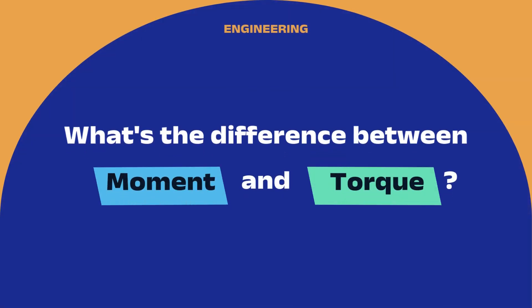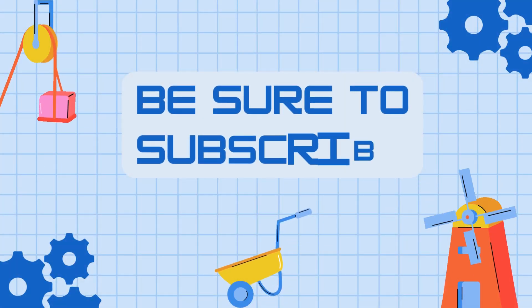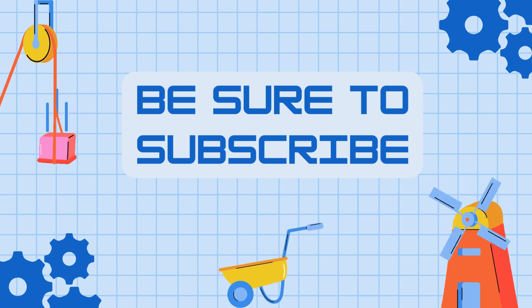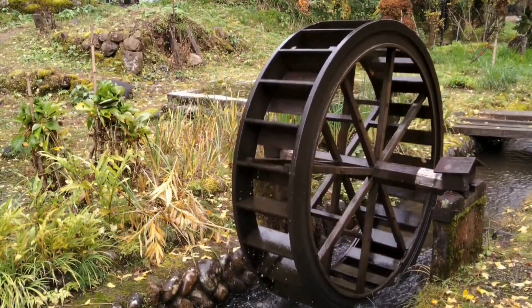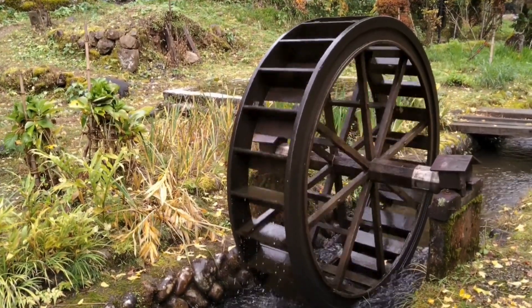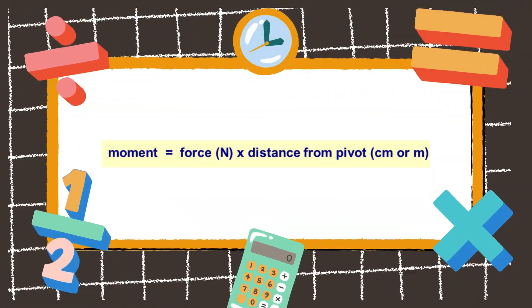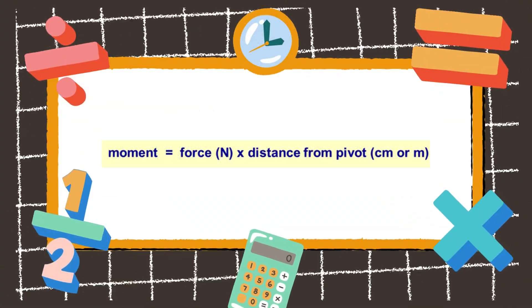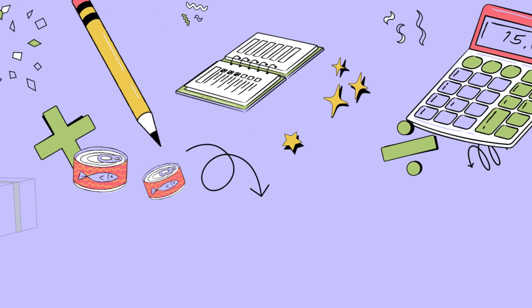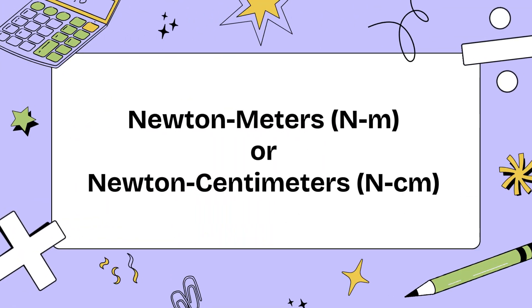While torque and moment are often used interchangeably, they have a key distinction in their application and context. Both concepts describe a turning or twisting effect caused by a force. The formula for both is the same — the force multiplied by the perpendicular distance from the axis of rotation — and the units for both are typically Newton meters.